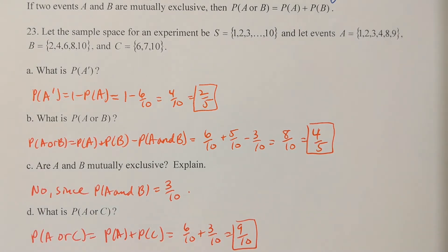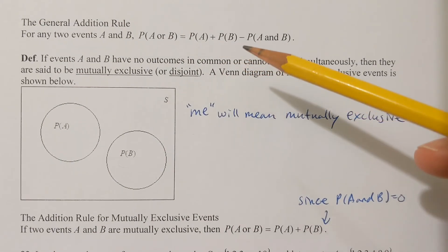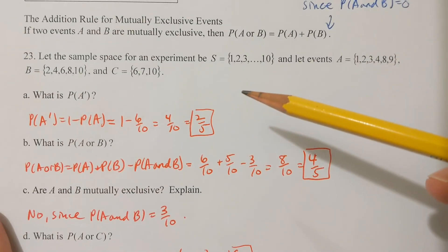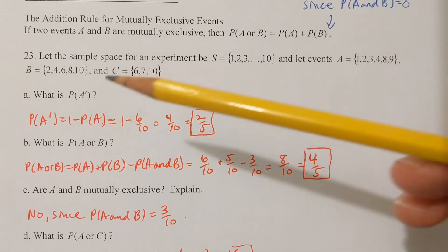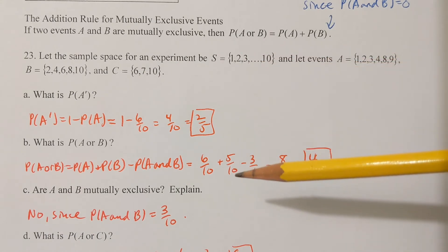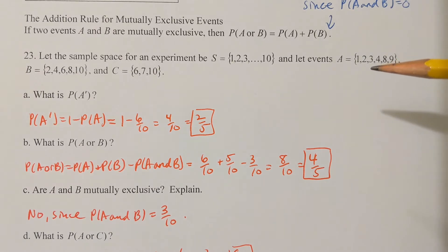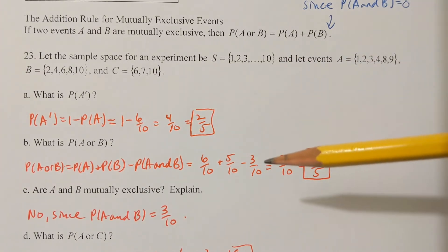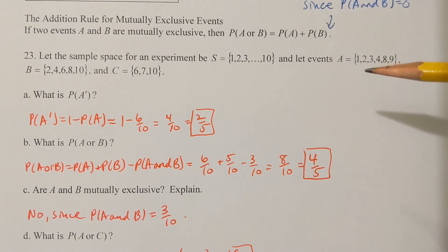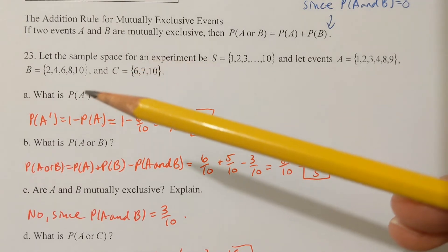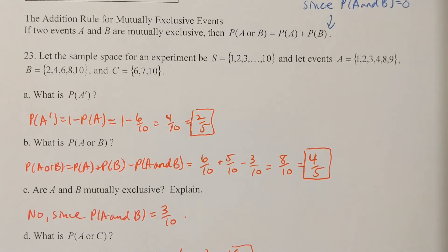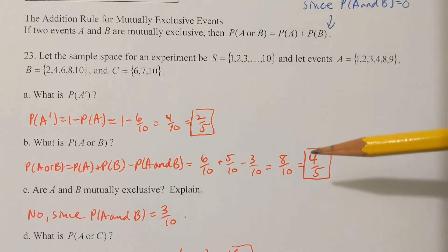Part B: what is the probability of A or B? Use the general addition rule — whenever the keyword is 'or,' think addition rule; whenever it's 'and,' think multiplication rule, which we'll cover in the next section. The probability of A is 6 over 10, the probability of B is 5 over 10, minus the probability of A and B. The elements 2, 4, and 8 are in both A and B, so that's 3 over 10. Therefore, 6 over 10 plus 5 over 10 minus 3 over 10 equals 8 over 10, or 4 fifths.